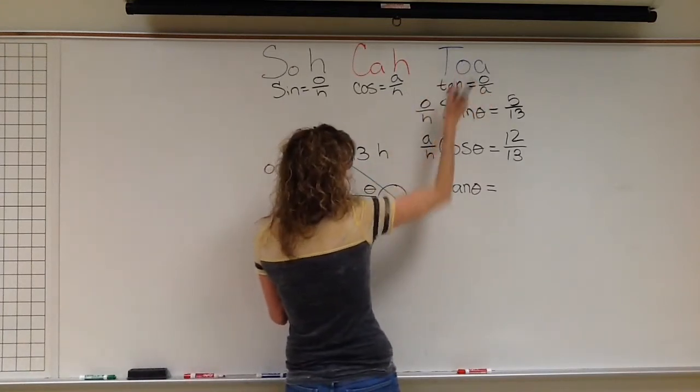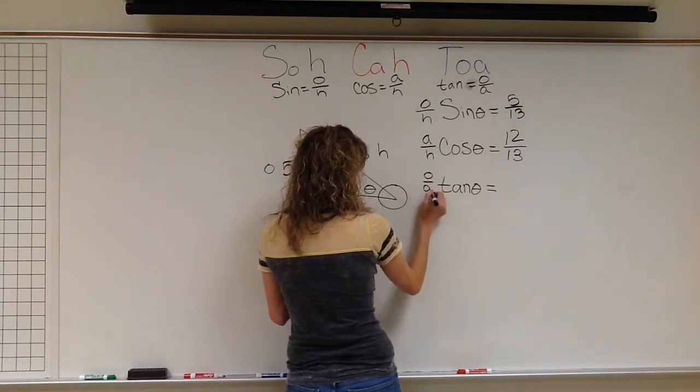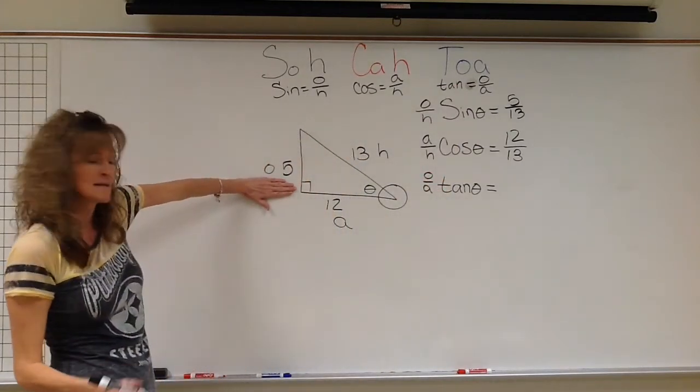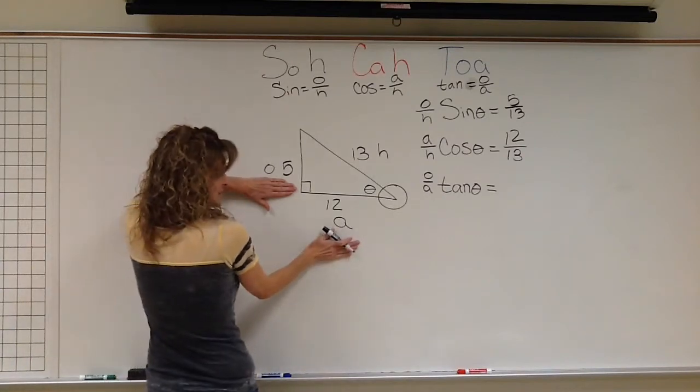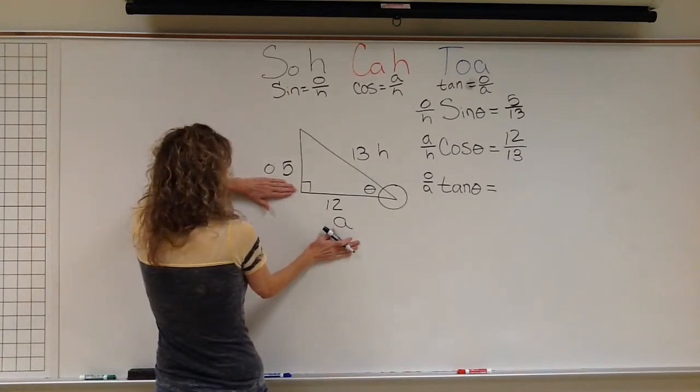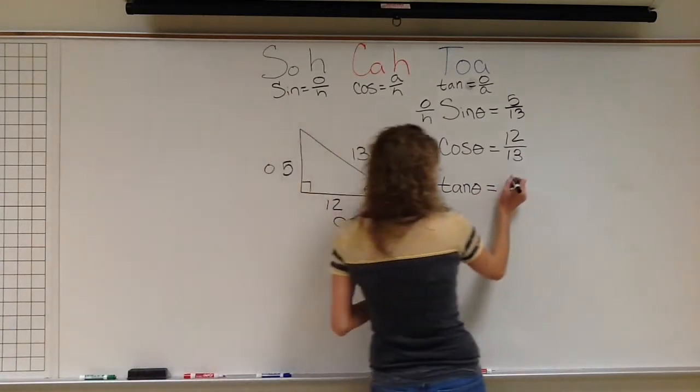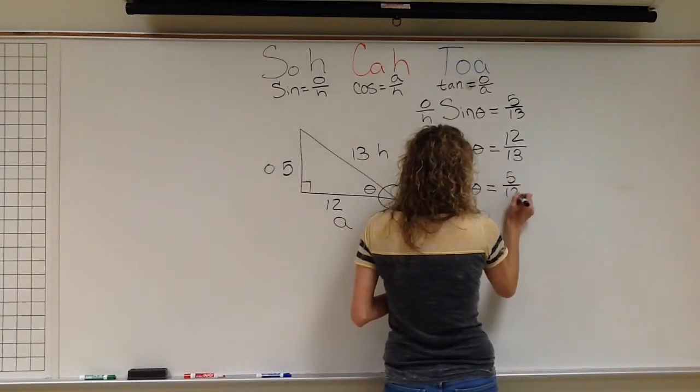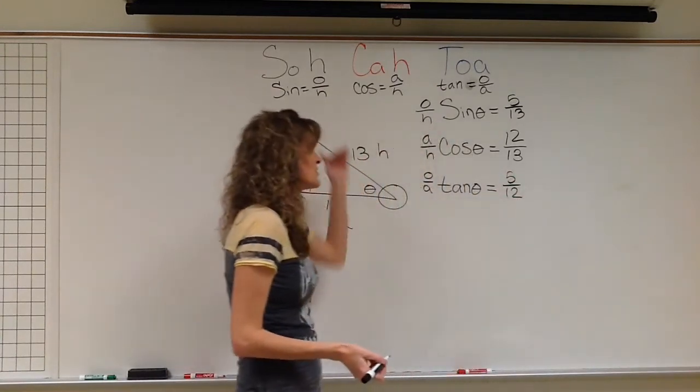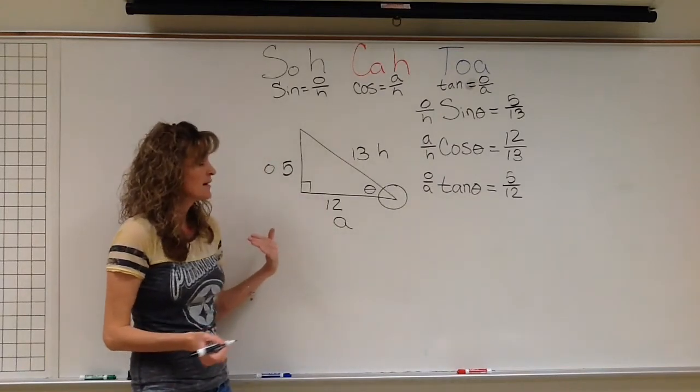Tangent, TOA, is opposite over adjacent. So I come over here. Identify my opposite side is 5. My adjacent side is 12. So it's going to be 5 over 12. And that is reduced. So now I have all three of my trig ratios set up.